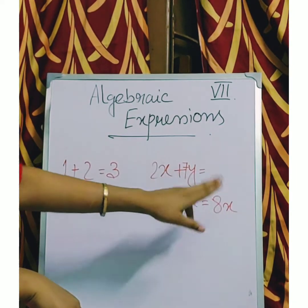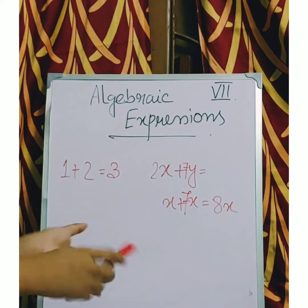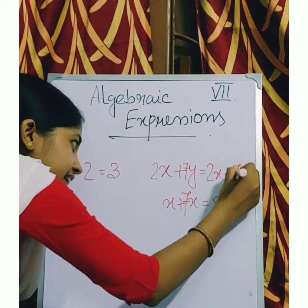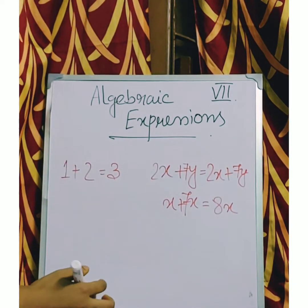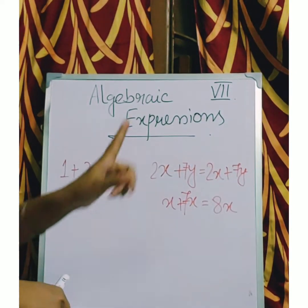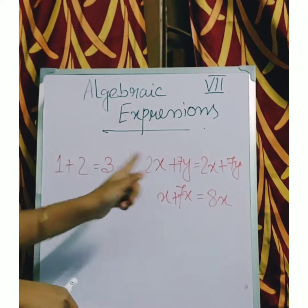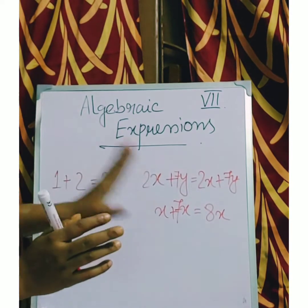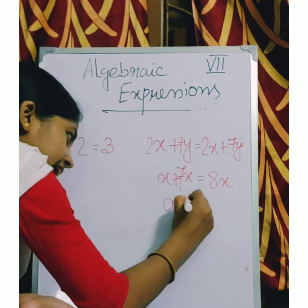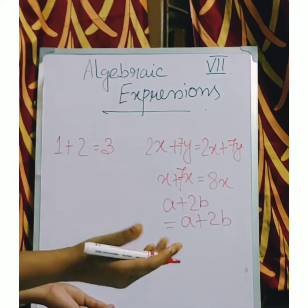But when the variables are different, 2x plus 7y, x and y are different variables. So when we add them what will be the addition? We cannot add different variables. Again I repeat, when the variables are same we can add. But when the variables are different we cannot add. The operation will be, the answer will be the same which is given. Suppose I am writing a plus 2b, answer is a plus 2b.